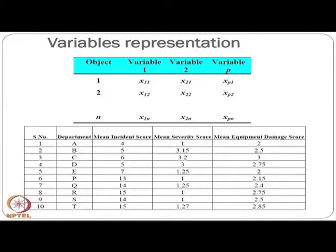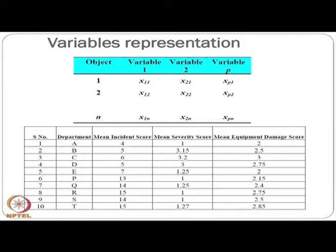I will formally introduce the data matrix in terms of x. This is the data matrix for different individuals. For the safety example, this is the collected data. The key difference from factor analysis is that here our aim is grouping the objects with the help of the variables, not grouping the variables themselves.